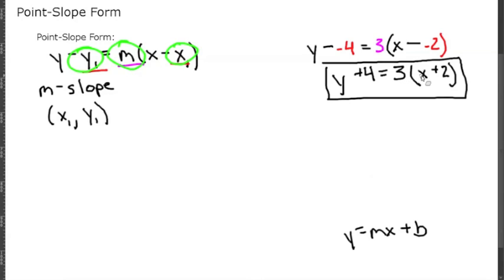So y plus 4 equals 3 times x plus 2. Our first step would be to distribute the 3. So rewriting this, we're going to have y plus 4 equals 3 times x plus 3 times 2, so 3x plus 6.